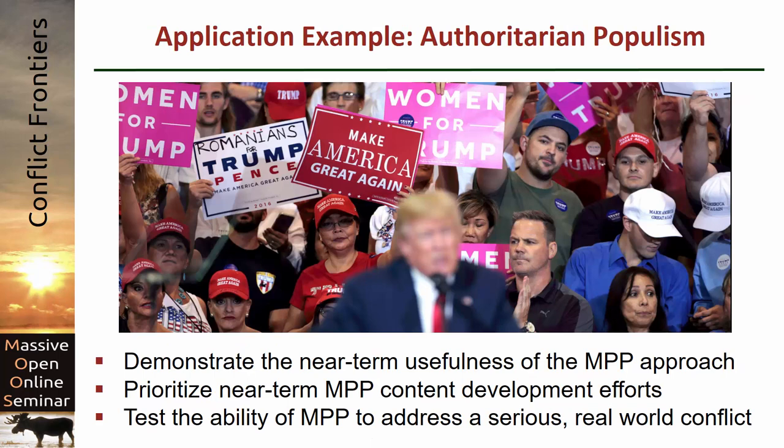The example I want to follow through to show how this would all work is something that we and others call authoritarian populism. We want to do three things: one is to demonstrate the near-term usefulness of the MPP approach — ideas that people could actually apply right now and help make this pretty scary situation a lot less scary. We're also using this to prioritize development of the next phase of the massively parallel peacebuilding project, focusing on components that address the authoritarian populism problem. And then we want to see whether this whole idea really will work when we get into the context of a serious real-world conflict.